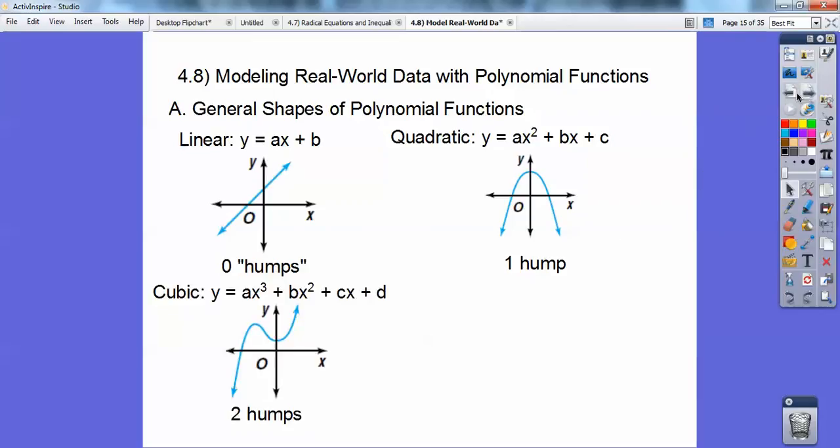Here's a cubic equation. A cubic equation typically looks like this. Now, some cubics don't have any humps. It goes down through like that. So a cubic might have two humps or no humps. It's always one less than the degree or two less than that or two less than that.